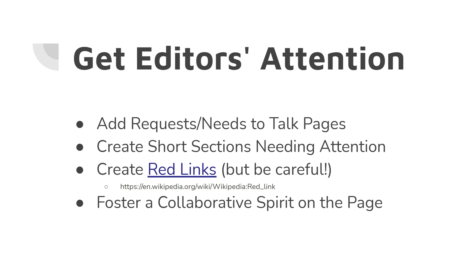Another thing that shows your engagement with this artist and area of knowledge is creating red links. Red links are links to pages that don't exist yet. Sparingly, you can create them to show other areas surrounding this artist that should also be on Wikipedia. Use them sparingly though — think about what from an encyclopedic standpoint really needs to be represented, not just everything that could potentially be its own Wikipedia page. Make sure you are creating a sense of collaboration on your page and constantly striving to find consensus, which is at the heart of Wikipedia.